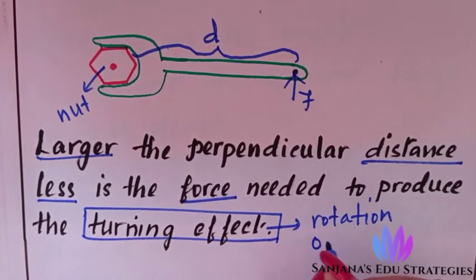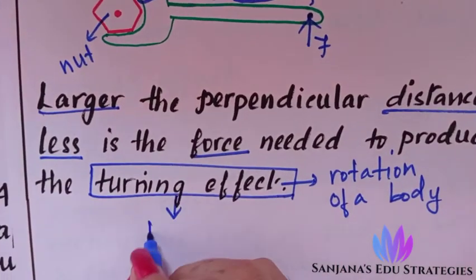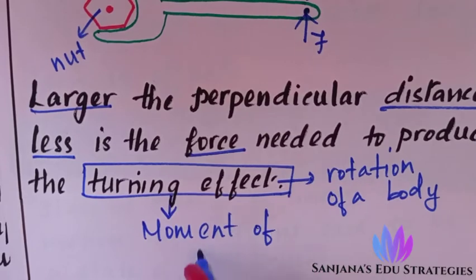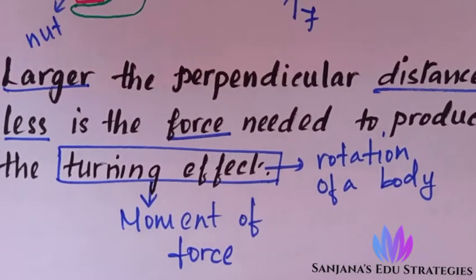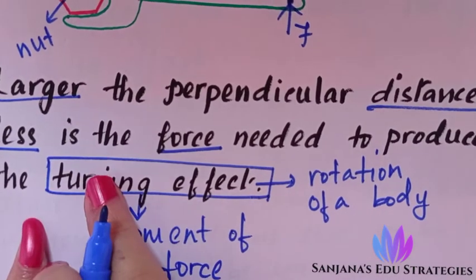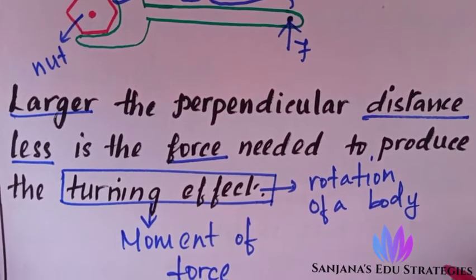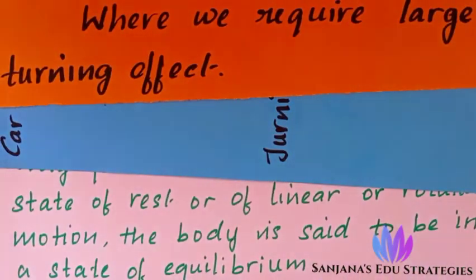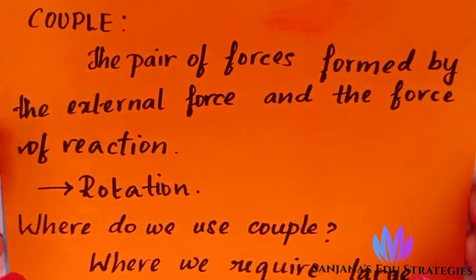The turning effect is otherwise known as the moment of force. The conclusion from these examples is: larger the perpendicular distance, less is the force needed to produce the turning effect — that is, the rotation of a body.